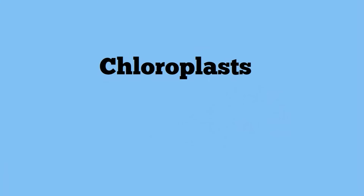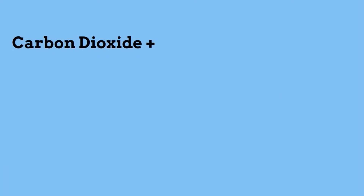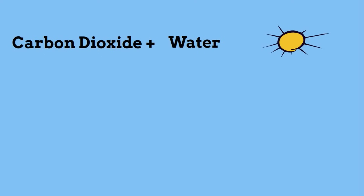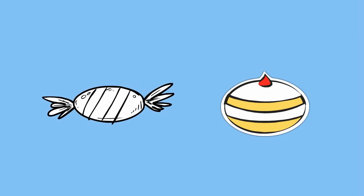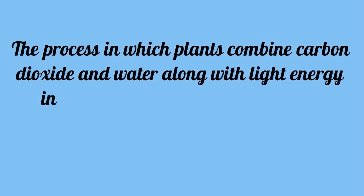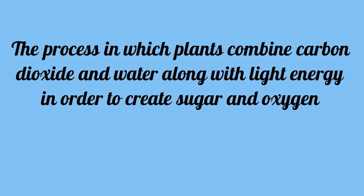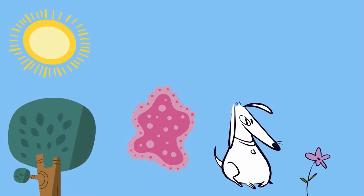Photosynthesis occurs at the chloroplasts. Plants take carbon dioxide plus water, with energy from the sun or light, and in a chemical reaction create sugar and oxygen. The sugar created in this chemical reaction becomes the plant's food, and the oxygen is released into the atmosphere. The definition of photosynthesis: the process in which plants combine carbon dioxide and water along with light energy in order to create sugar and oxygen.